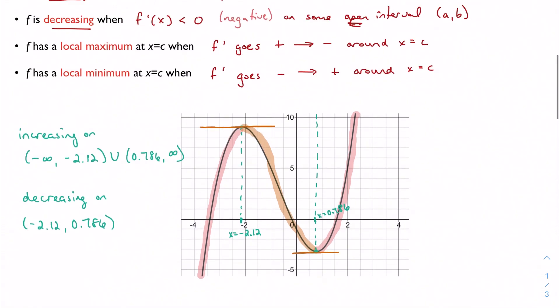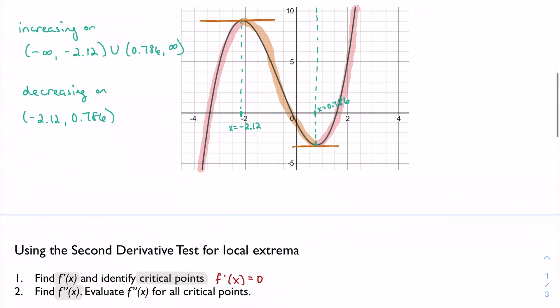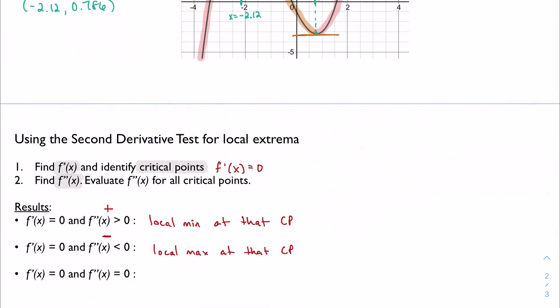Likewise, for a minimum, my derivative, my slope, is going from negative to positive. So if I were to track the value of the slope, going from negative to positive, that is itself a positive slope, which means my second derivative is positive, but I have a local minimum.